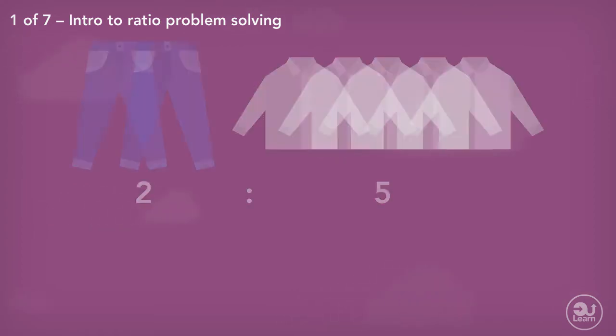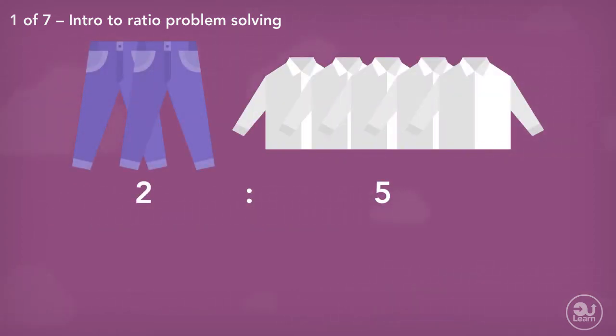We can use ratios to see the relationship between things. With the relationship known, we can find the amount of something easily.